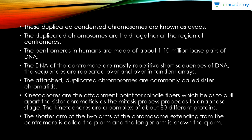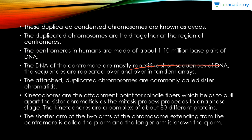These duplicated, condensed chromosomes are known as dyads. They are held together at the region of the centromere, which in humans is made up of 1 to 10 million base pairs of DNA consisting mostly of short repetitive sequences in tandem arrays. The attached duplicated chromosomes are known as sister chromatids. Kinetochores are the attachment points for spindle fibers, which pull apart the sister chromatids during anaphase; kinetochores are complex structures involving about 80 different proteins.